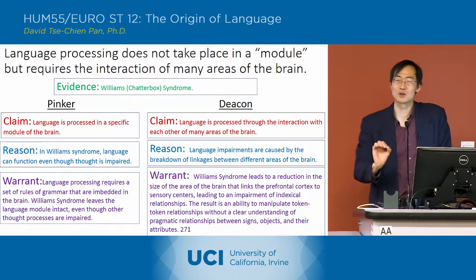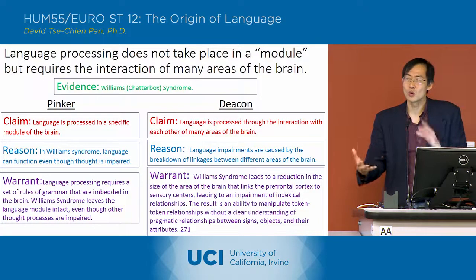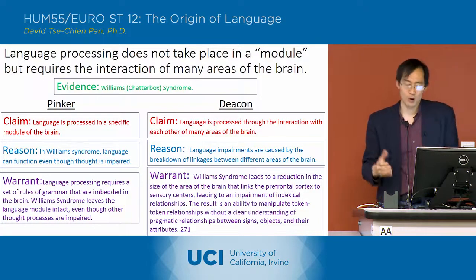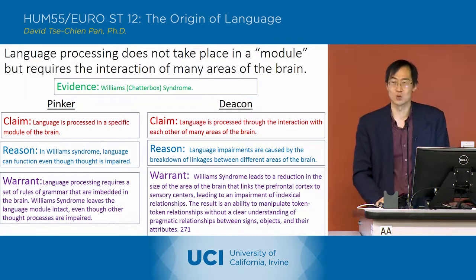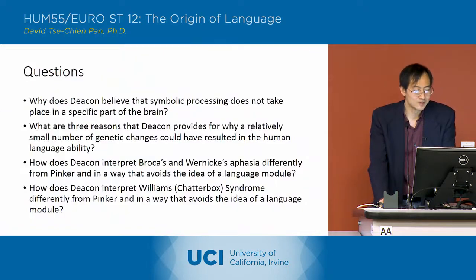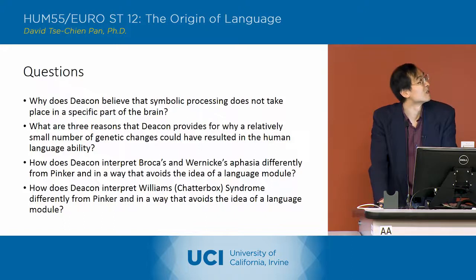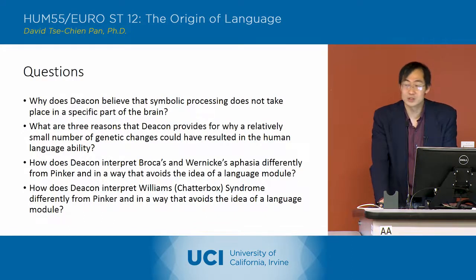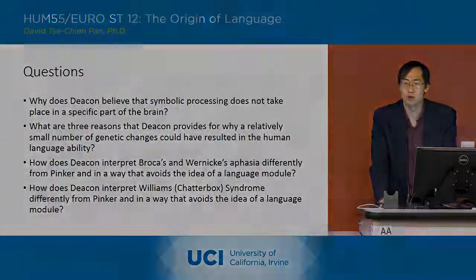So again, Deacon locates the problem in the way different parts of the brain relate to each other. We're out of time, so this will be finished next time, completing chapters 11 and 12.